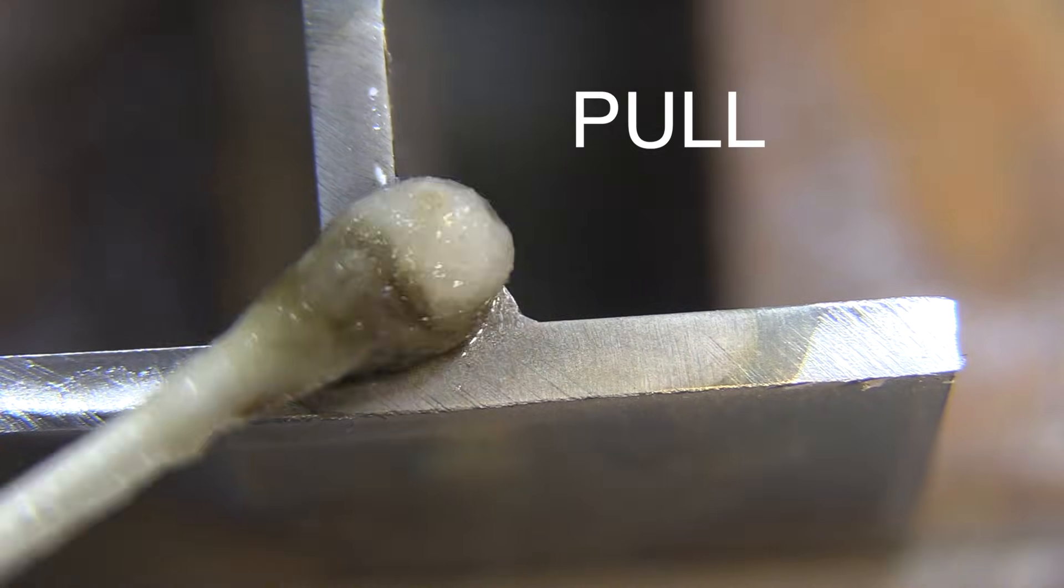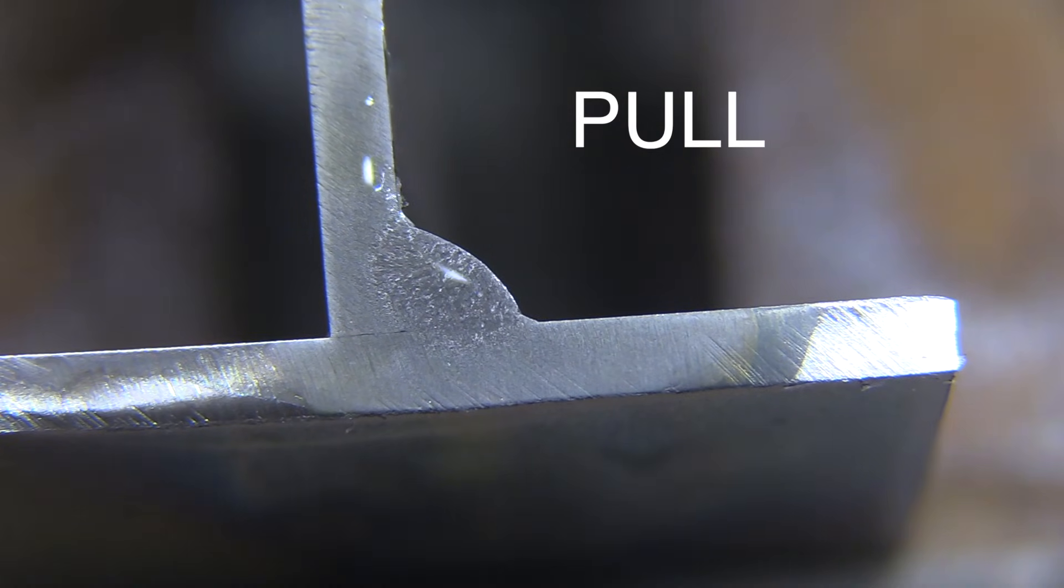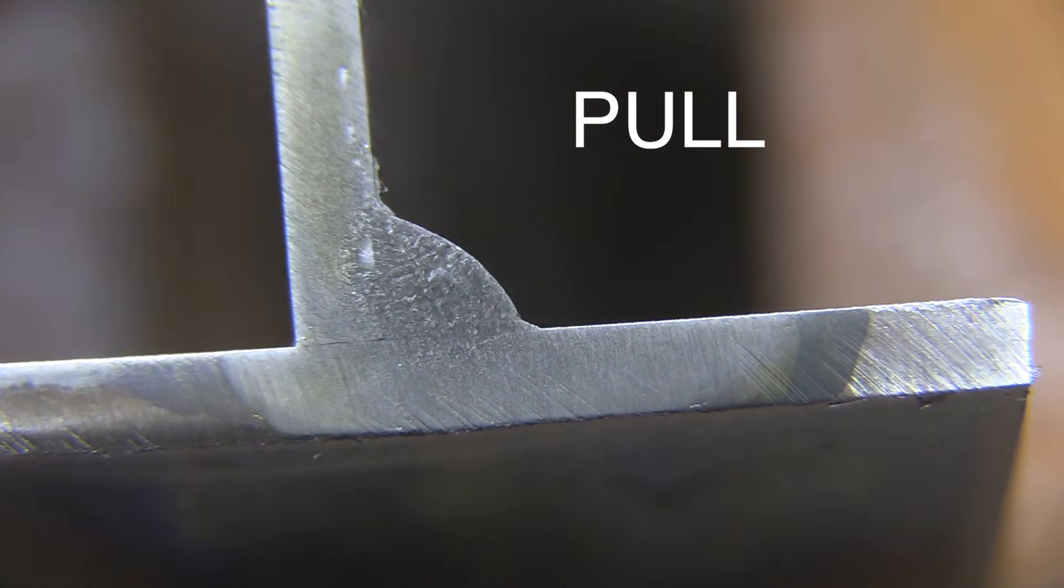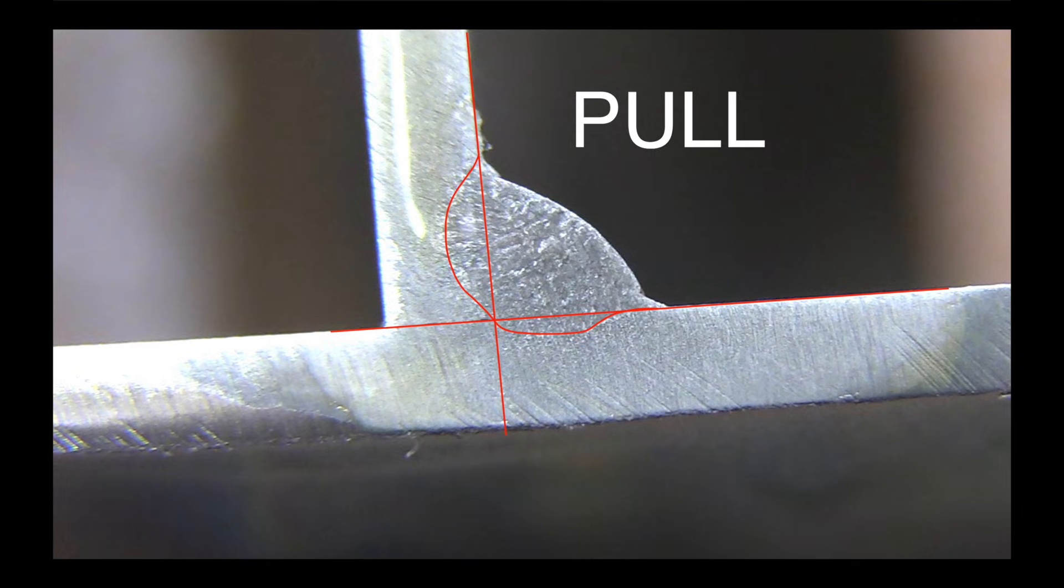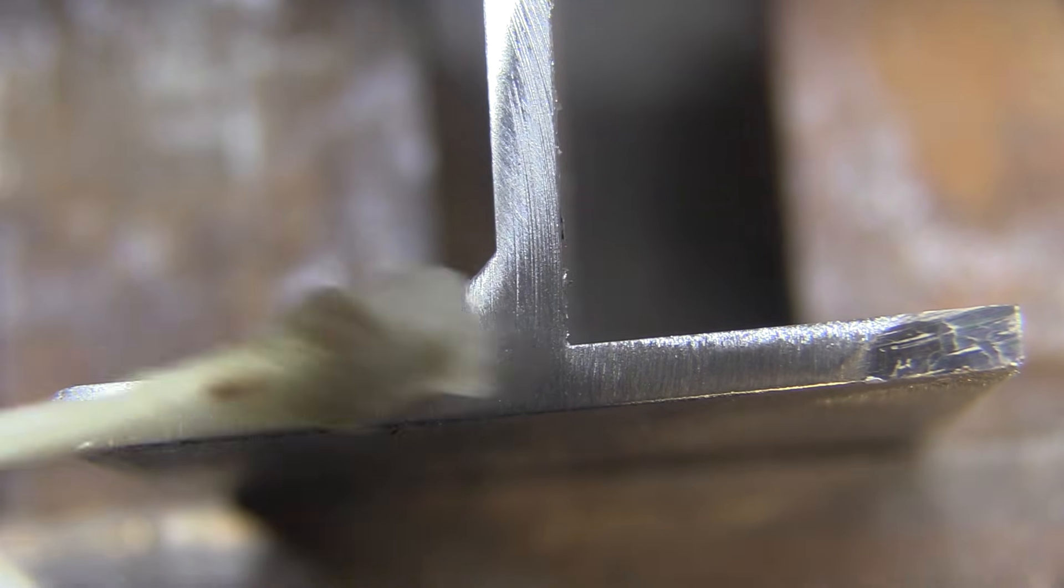Got a decent polish on there with a red Scotch-Brite pad. The pull angle first. So check that one out. Pretty decent little nugget there. Nothing like you would get on spray transfer, but this is short circuit transfer. It's not spray.